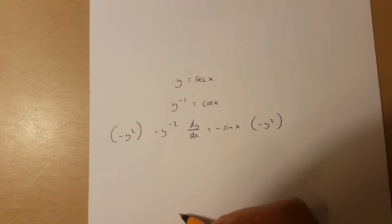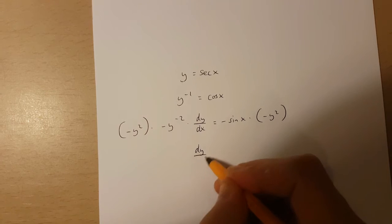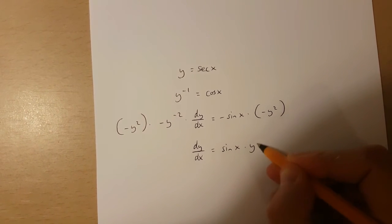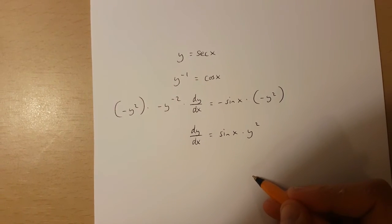If I do this, I'm going to get dy over dx is equal to sin x times y squared.